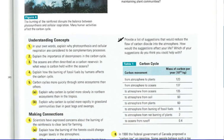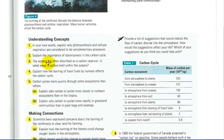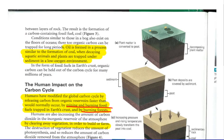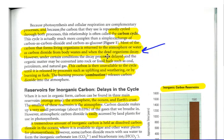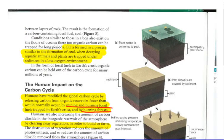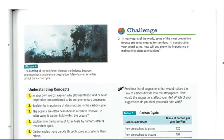So, in number one, in your own words, explain why photosynthesis and cellular respiration are considered to be complementary processes. I already talked about that, so hopefully you should get that. Two, explain the importance of decomposers in the carbon cycle. We talked about that on one of the previous pages. It's a key point.